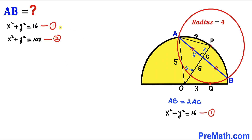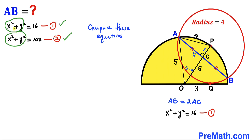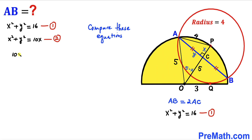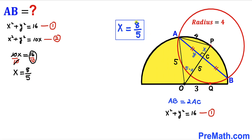Comparing equations 1 and 2, the left-hand sides are identical (both x² + y²), so we equate the right-hand sides: 16 = 10x. Dividing both sides by 10 and simplifying, x = 8/5.